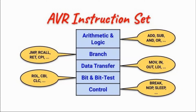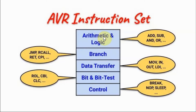The AVR assembly instruction set is divided into five types: arithmetic and logic instructions, branch, data transfer, bit and bit test, and control instructions. In this video, we will focus on arithmetic instructions and more specifically on unsigned arithmetic instructions.